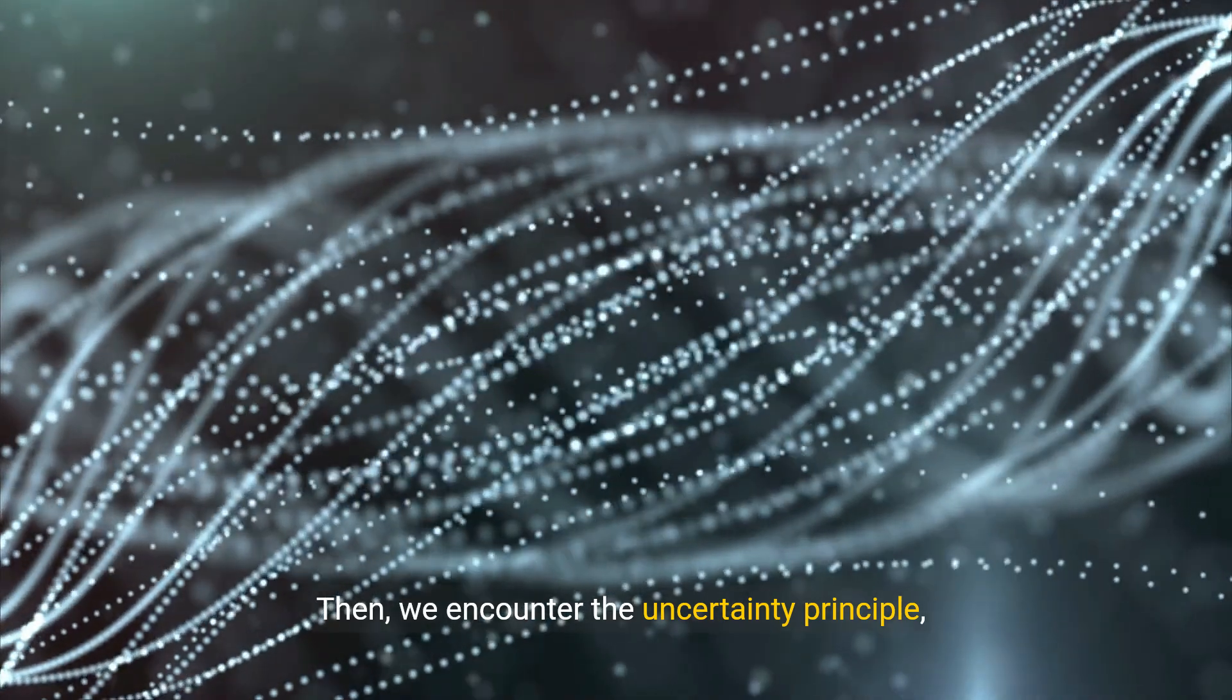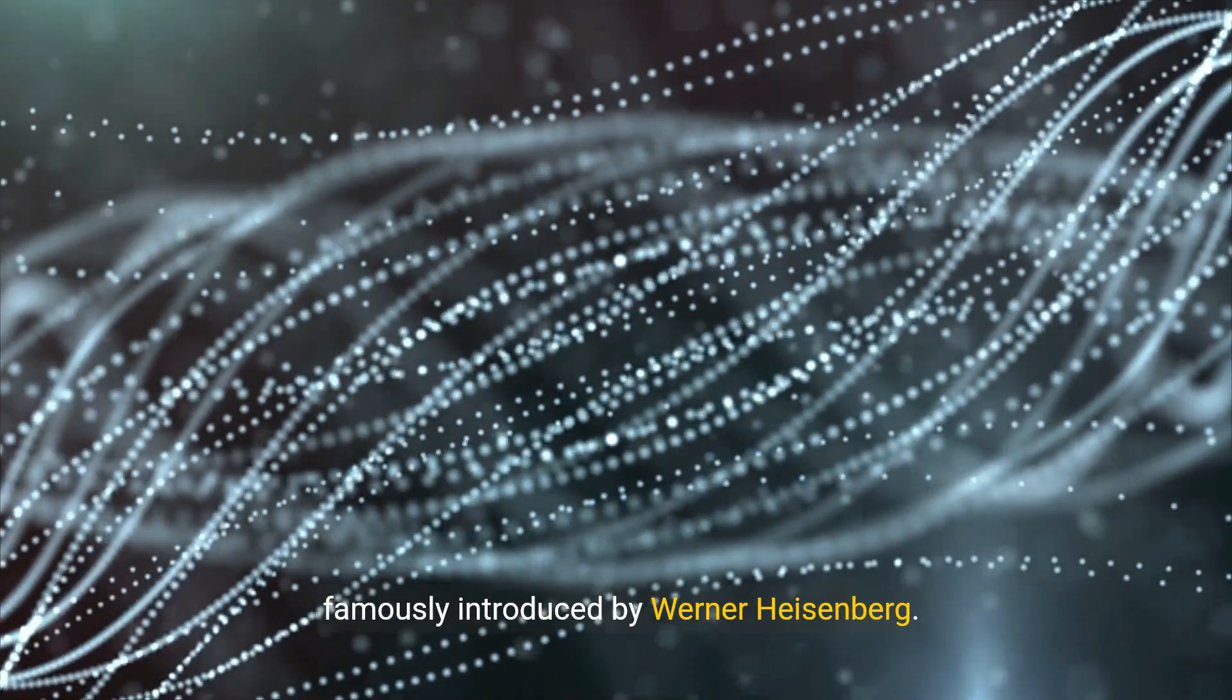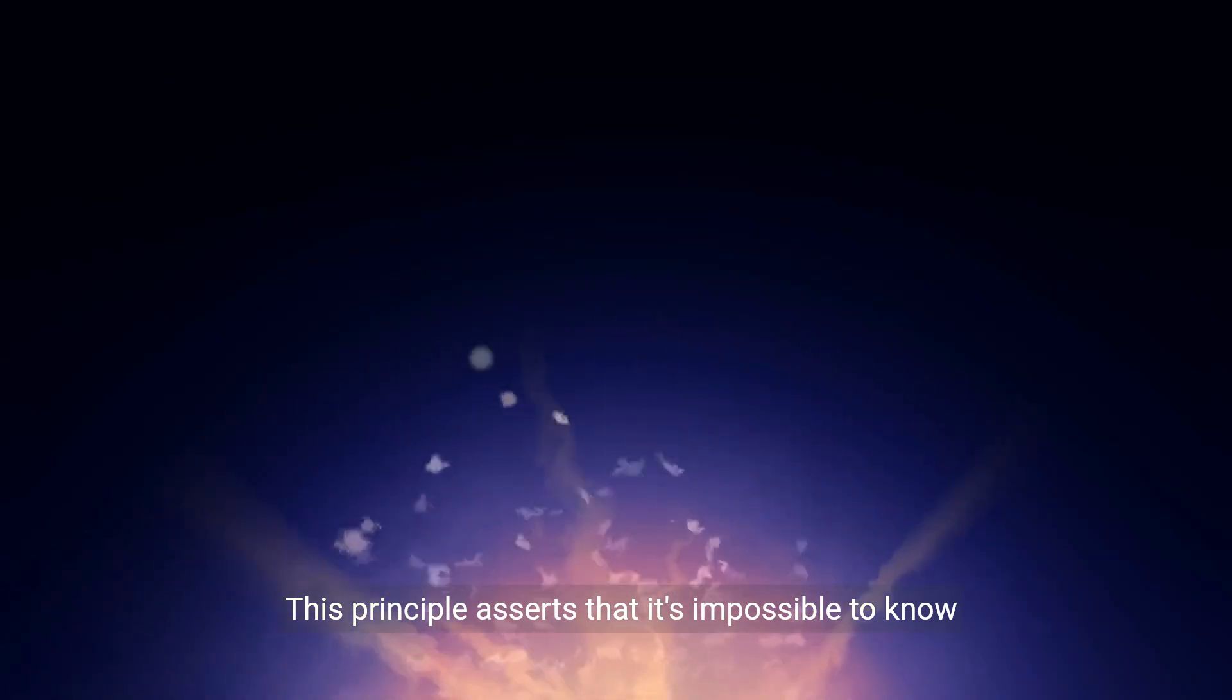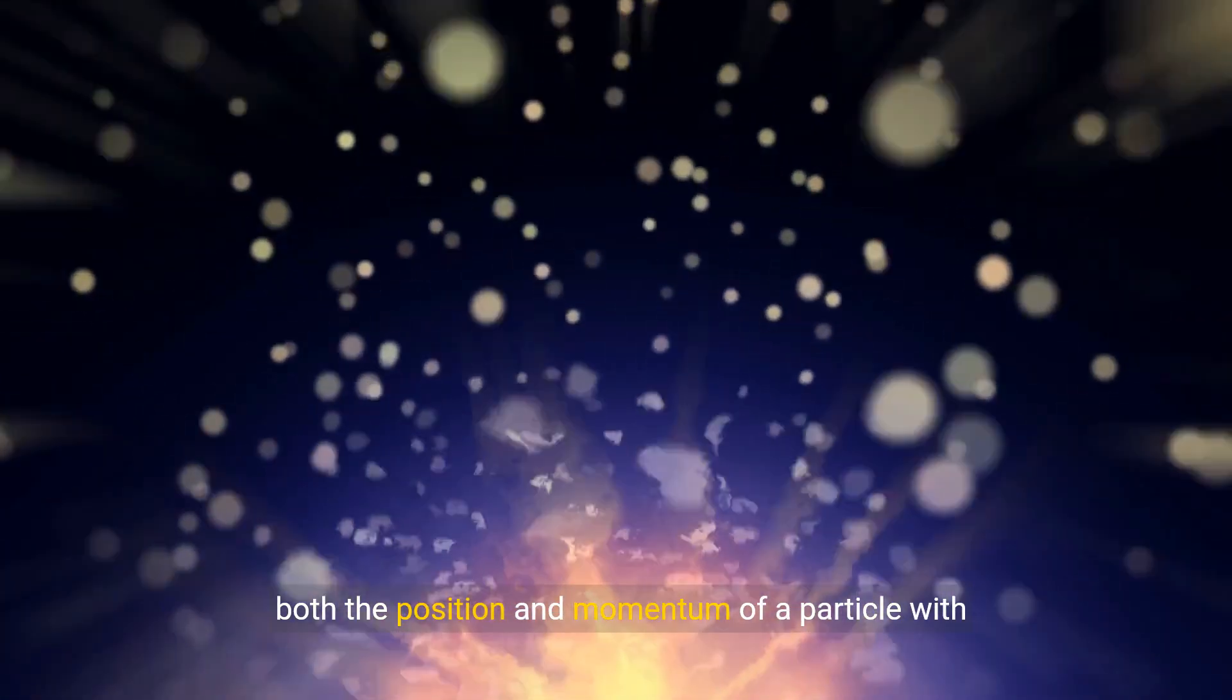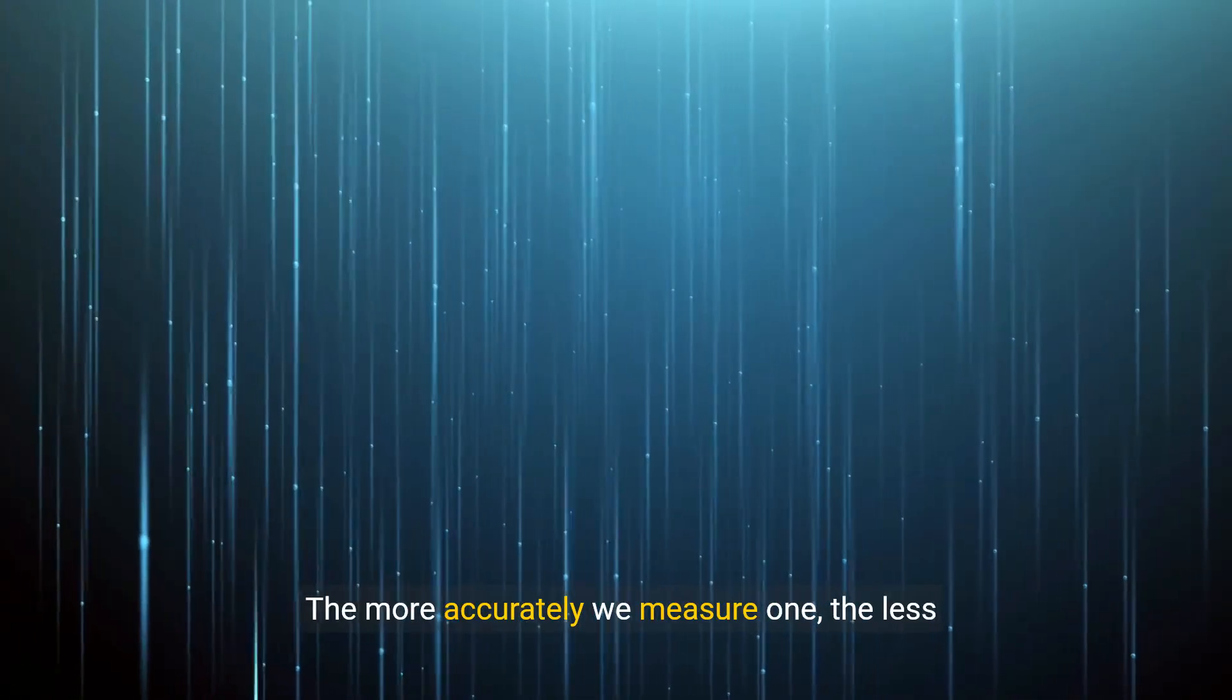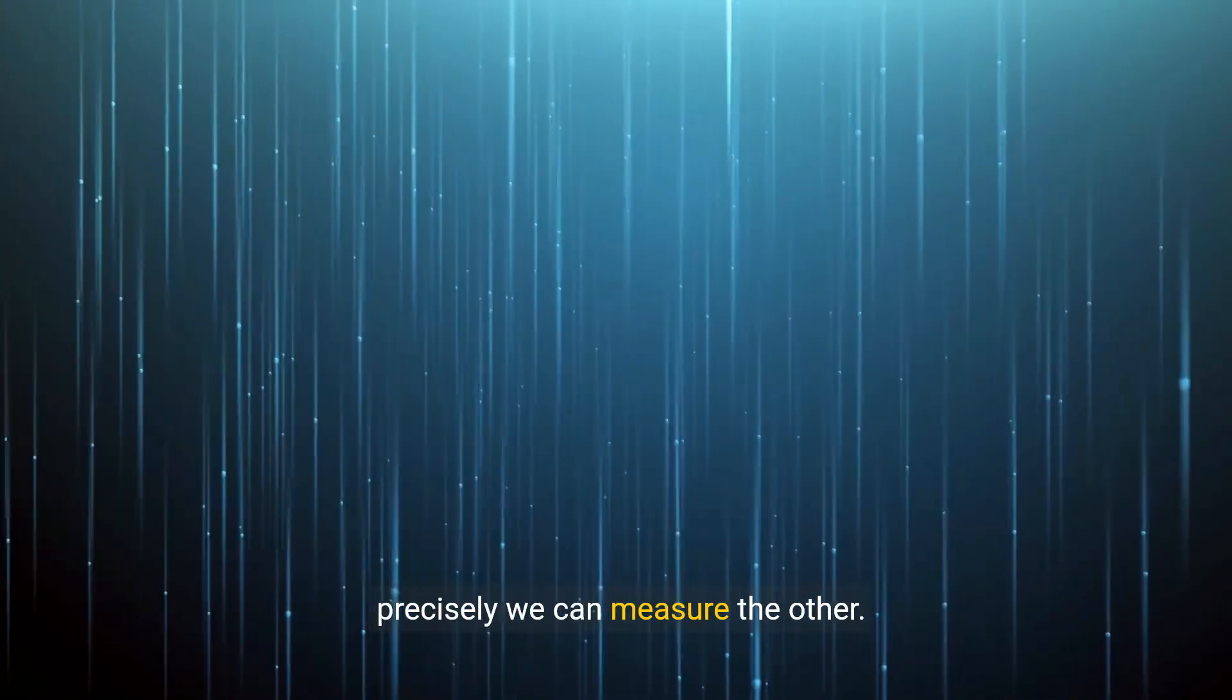Then we encounter the uncertainty principle, famously introduced by Werner Heisenberg. This principle asserts that it's impossible to know both the position and momentum of a particle with absolute precision. The more accurately we measure one, the less precisely we can measure the other.